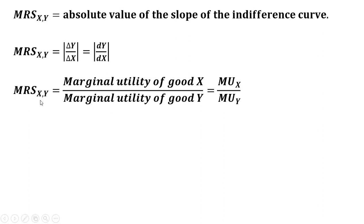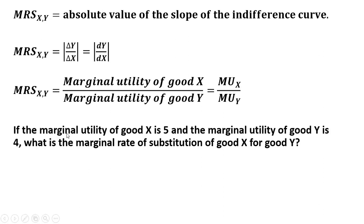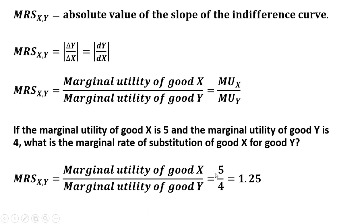The marginal rate of substitution of good x for good y can be shown to equal the ratio of marginal utilities — the marginal utility of good x divided by the marginal utility of good y. For example, if the marginal utility of good x is 5 and the marginal utility of good y is 4, the MRS is 5 divided by 4, which equals 1.25. The consumer is willing to give up 1.25 units of good y for one more unit of good x, holding utility fixed.